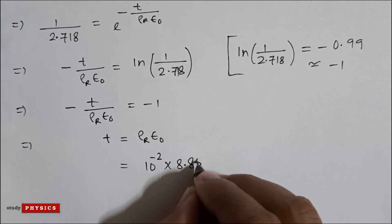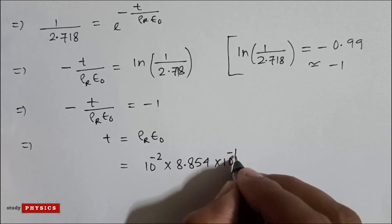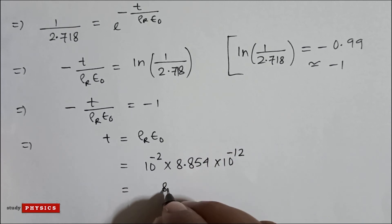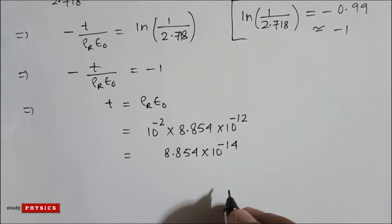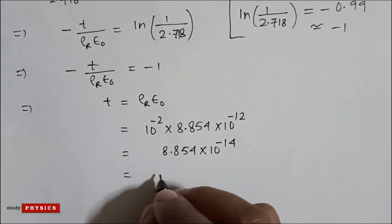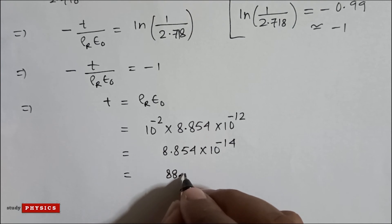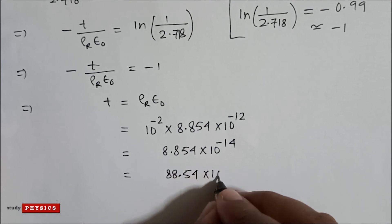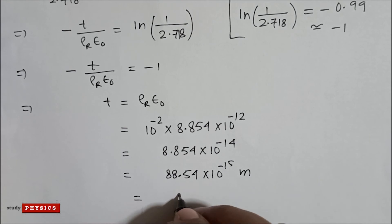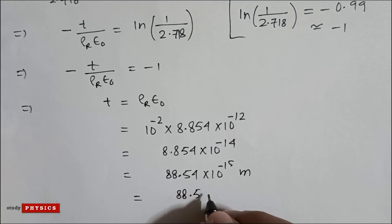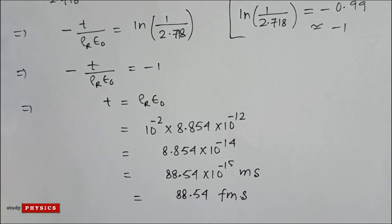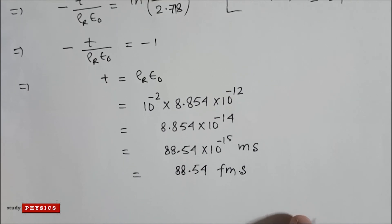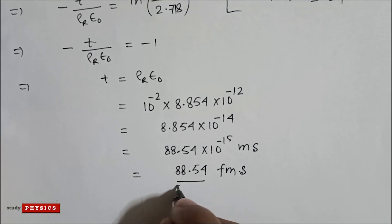So t equals ρᵣε₀: that is 10 to the power minus 2 multiplied by ε₀, which is 8.854 into 10 to the power minus 12, giving 8.854 into 10 to the power minus 14. In femtosecond order, this is 88.54 into 10 to the power minus 15 seconds, that means 88.54 femtoseconds. So the answer is 88.54 femtoseconds.